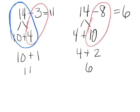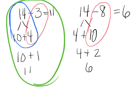So in this one example here, the one on the left here, because the ones were such that we can subtract ones from ones, we decomposed it 10 plus 4 like this.